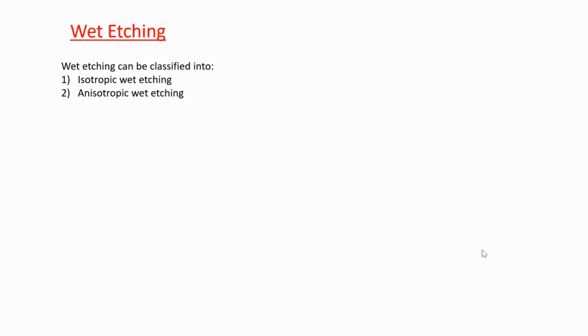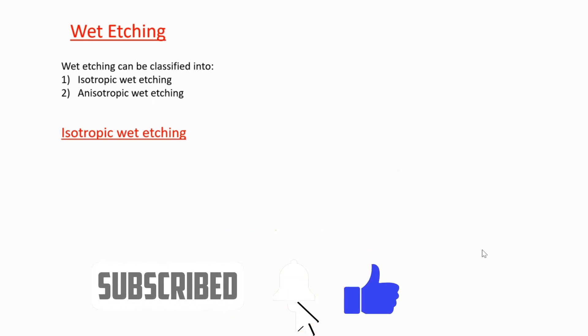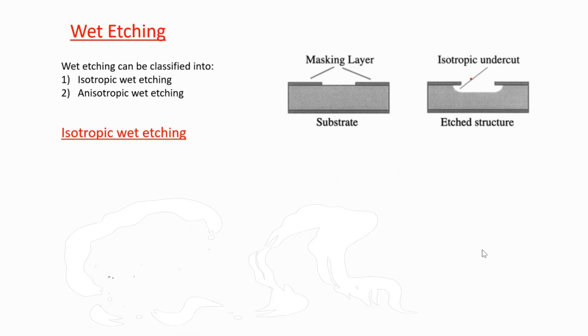Wet etching can be divided into isotropic etching and anisotropic wet etching. In isotropic wet etching, etching is not orientation dependent. Whether your material is 100, 110, or 111 oriented, it doesn't matter - it etches everything uniformly.